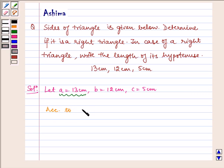According to Pythagoras theorem, b squared plus c squared equals a squared, where a is the largest side.